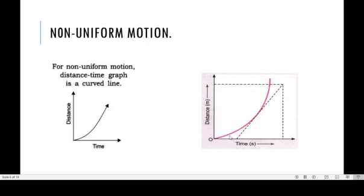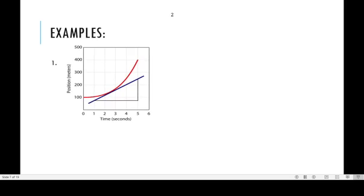So how do you get the slope for a curved graph? You need to draw a straight line known as a tangent — a line that touches the curve at one point. Then you draw your vertical line and horizontal line so you can get the change in the vertical, which is Δs, and the change in time, which is Δt, and find the ratio Δs/Δt to give you the slope, which is the speed.